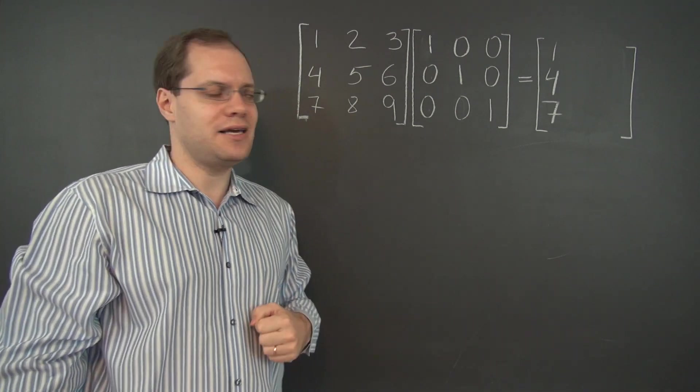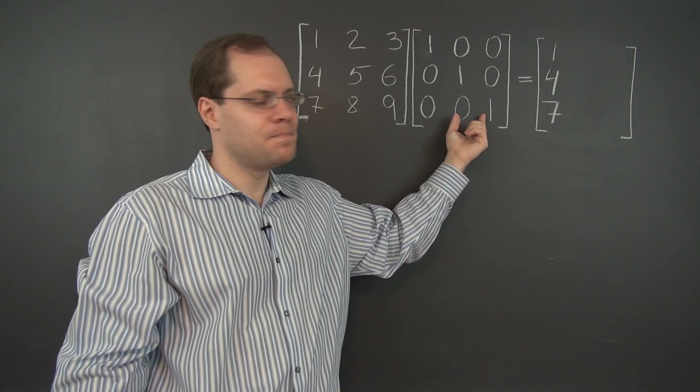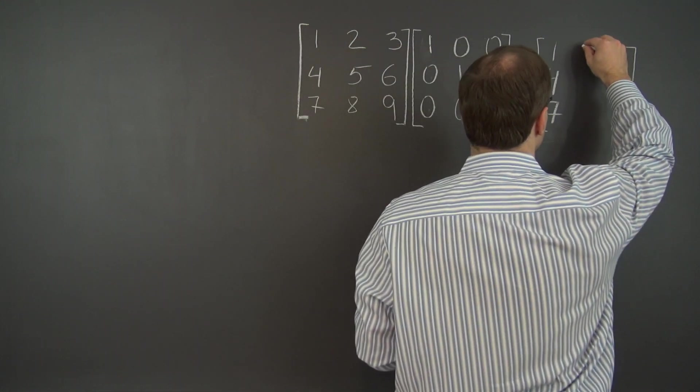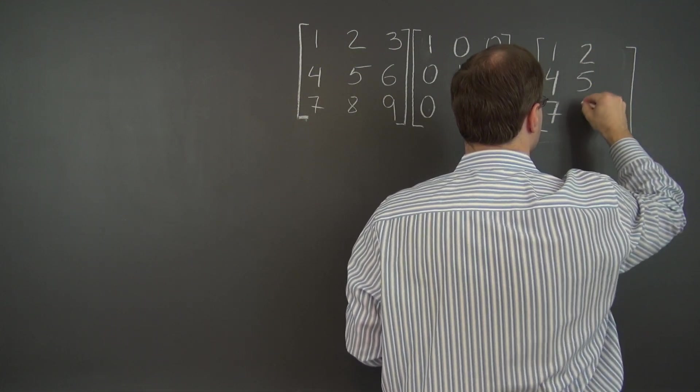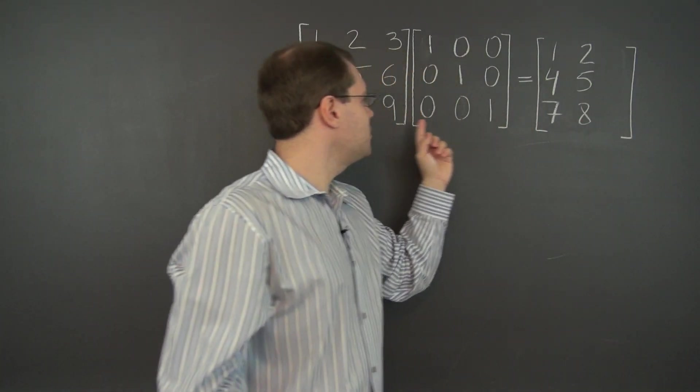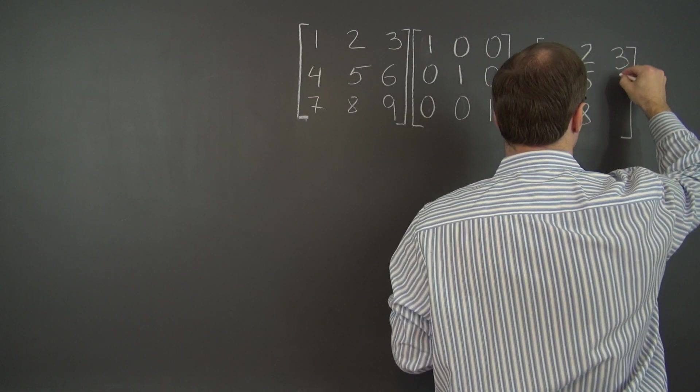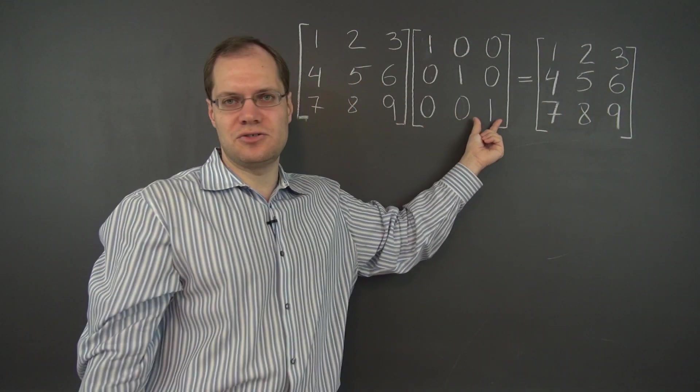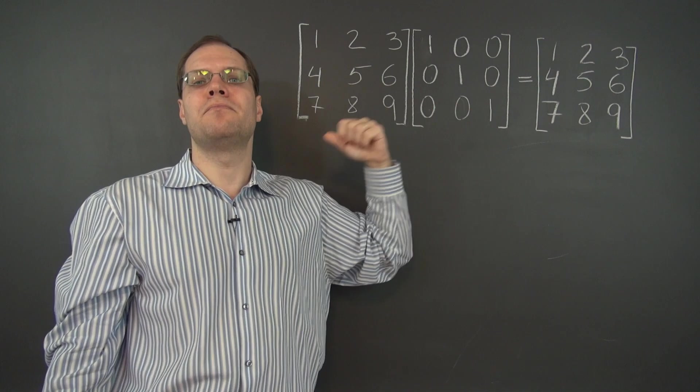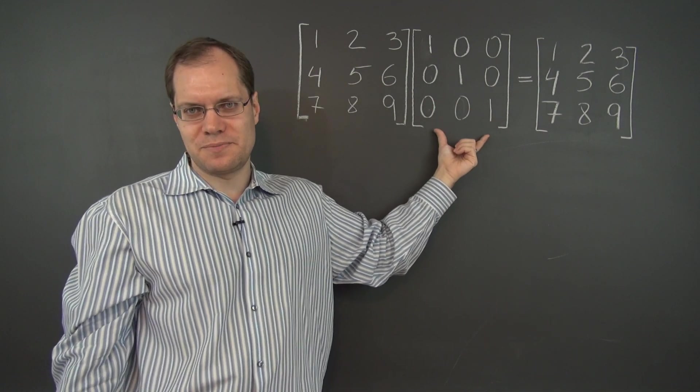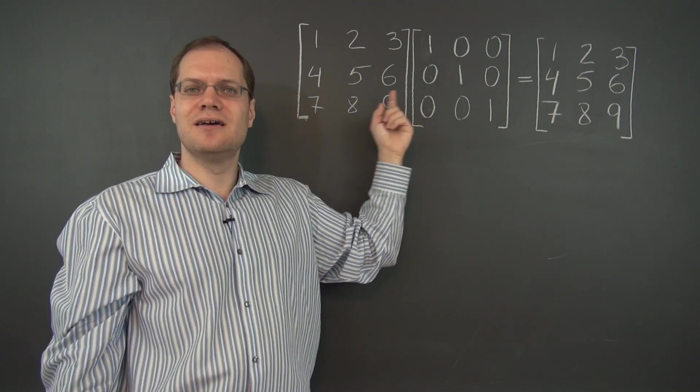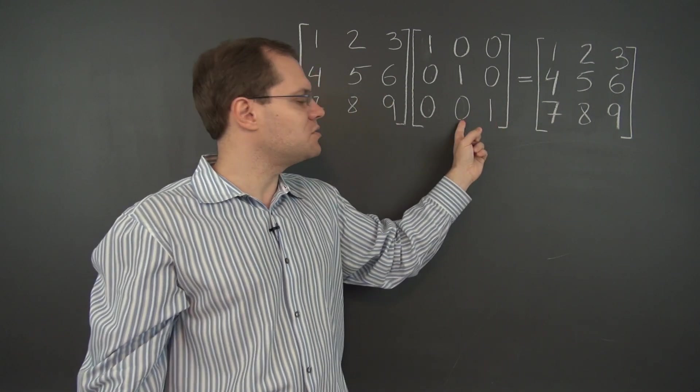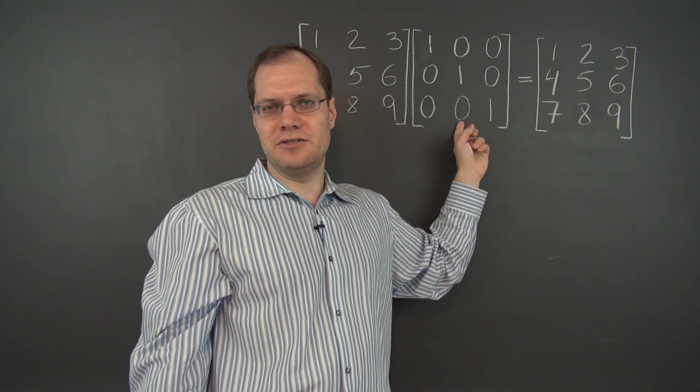Of course, this column will pick out the second column of the matrix, and that's 258. And this last column will pick out the last column of the matrix, which is 369. The semi-big picture is that these columns individually are column pickers. But the really big picture perspective is that this matrix leaves whatever comes on the left completely unchanged. That's what makes it the identity matrix.